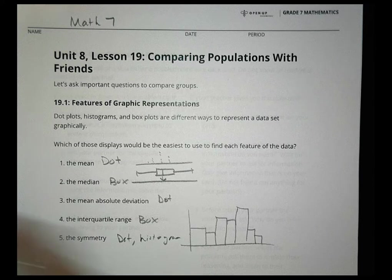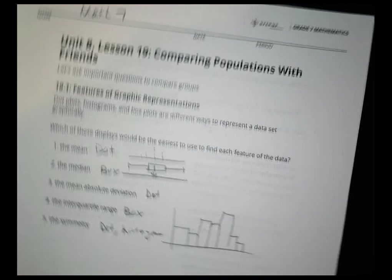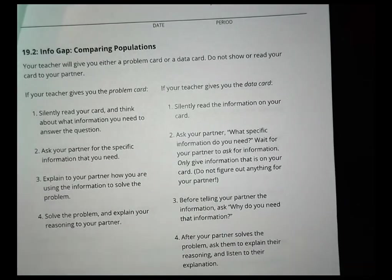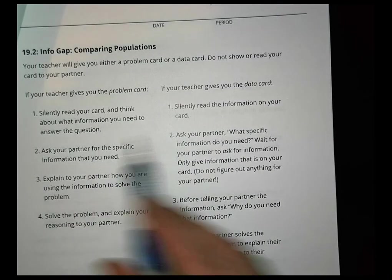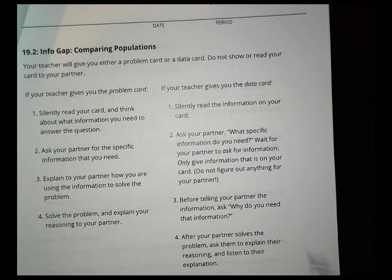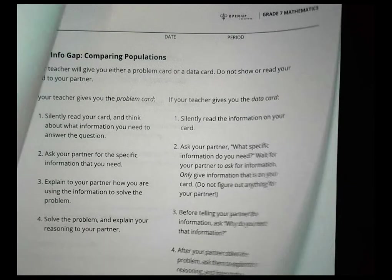I'm going to skip Activity 2 because it's an info gap activity you'll do in class. Your teacher will give you cards — you'll have a problem card, your partner has a data card, and you ask questions back and forth to solve it.